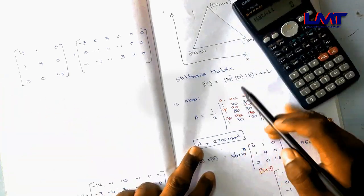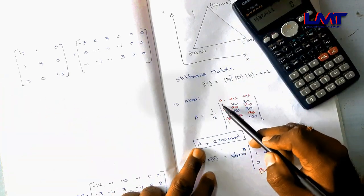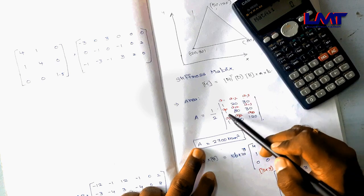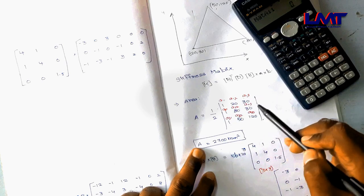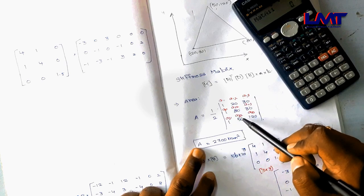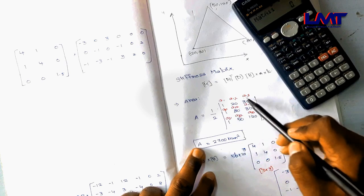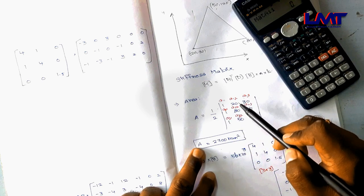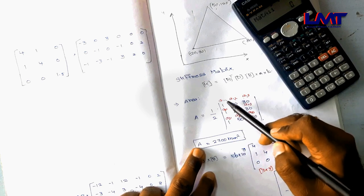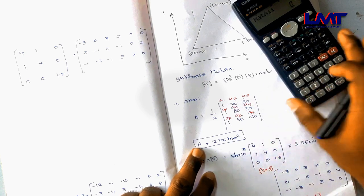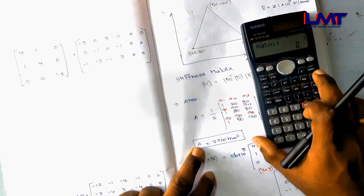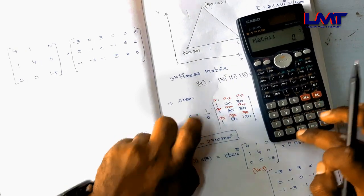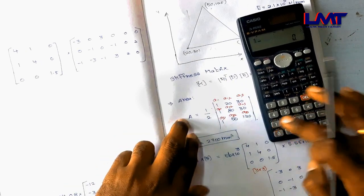First we import matrix A. We set the dimension: 3 rows × 3 columns — enter 3, equal, 3, equal. Now we enter values: A11, A12, A13, A21, A22, A23, A31, A32, A33, filling in the formation of the matrix.